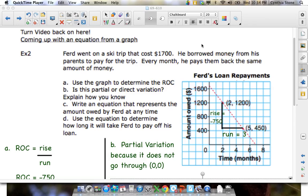This problem is a little bit harder. Now we're going to come up with an equation if we're given the graph. So imagine Ferd's got some loan that he borrowed from mom and dad, $1,700. He's got to pay them back every month. If this was the graph relating his payments, can we figure out an equation to represent that? We start by, it's broken down for you. Use the graph to determine the rate of change.